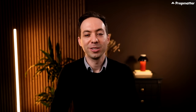For the last logical reasoning question, we need to identify the pattern. Focusing on the circle, it seems to be moving clockwise, so the fifth circle should be at the top left. Looking at the plus sign, it moves in the opposite direction — anti-clockwise — so the fifth plus sign should be at the top right. The answer is C.